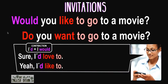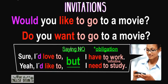To review: when we ask someone an invitation, we have two ways. We use 'would' and 'like,' or we use 'do' and 'want,' always with the infinitive. For example: Would you like to go to a movie? Or: Do you want to go to a movie? To say yes, we use the short version with the contraction 'I'd': Sure, I'd love to. Or: Yeah, I'd like to. Remember, the 'to' is very important. But when we say no, we use the short form to be polite, then the word 'but,' and then the obligation using 'I have to' or 'I need to.'